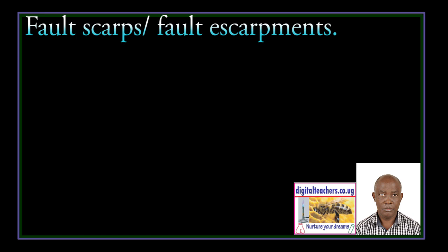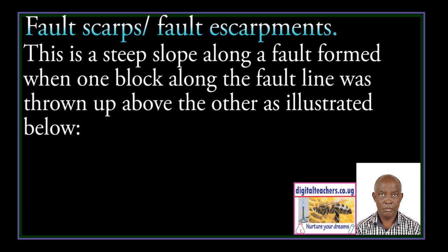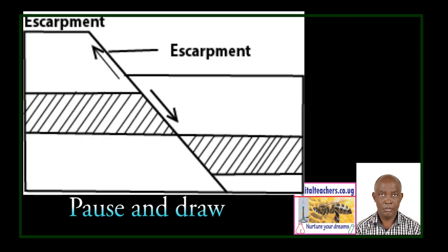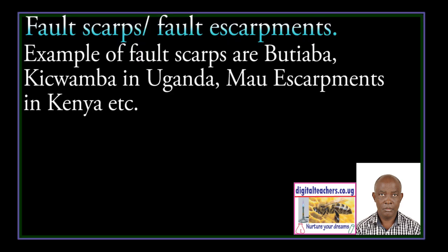Formation of fault scarps. A slope along a fault is formed when one block along the fault line was raised above the other, as illustrated below. Examples of fault scarps are Butiaba and Kichwamba in Uganda, and Mau Escarpment in Kenya.